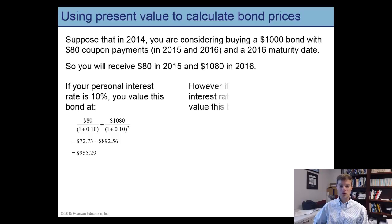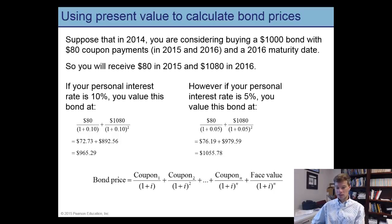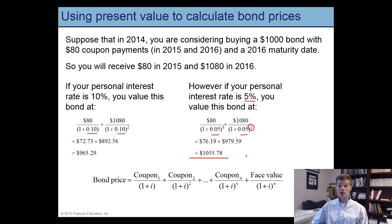Now let's look at a second example with a different discount rate of 5%. Instead of using 0.1 for the discount rate we use 0.05. The payments are the same — $80 at the end of year one and $1,080 at the end of year two. The present value of the bond is now $1,055.78, which is larger than in the first example because the lower discount rate makes the present value of these future payments higher.